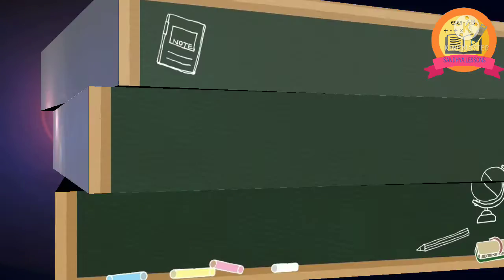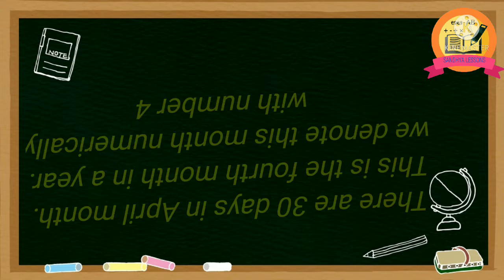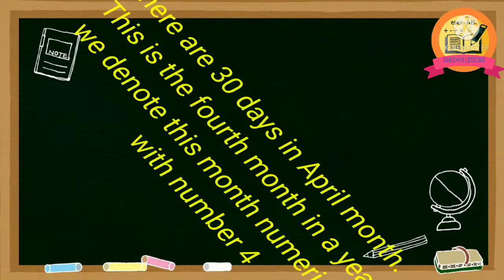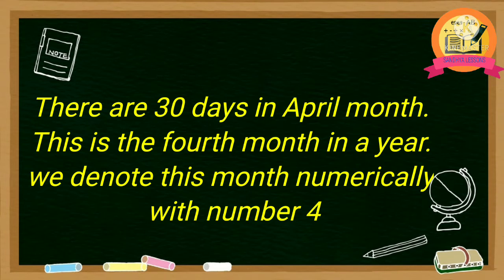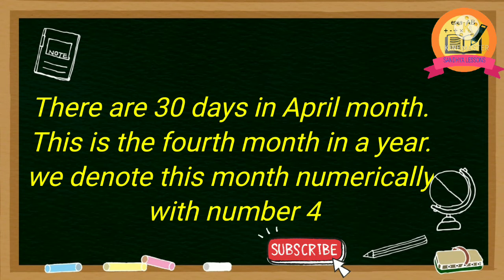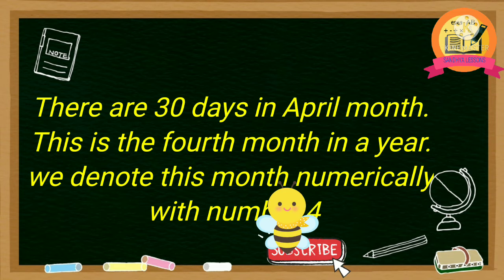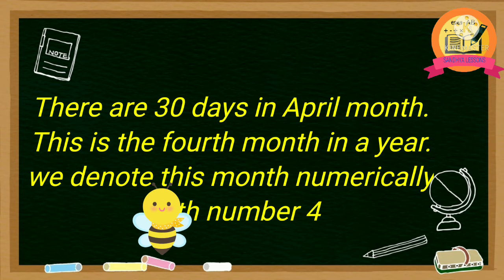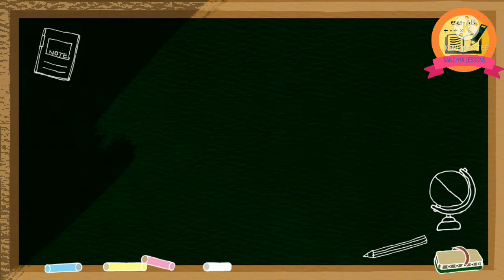March. There are 30 days in April month. This is the fourth month in a year. We denote this month numerically with number 4.